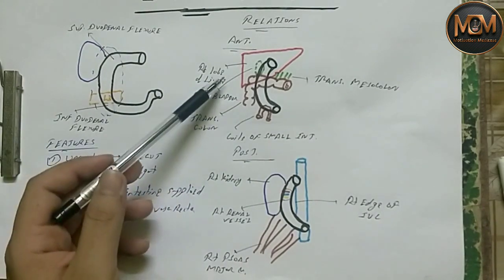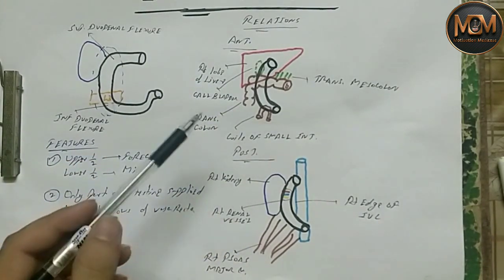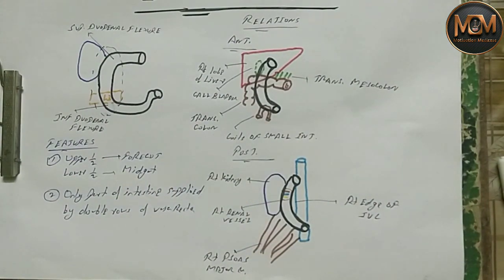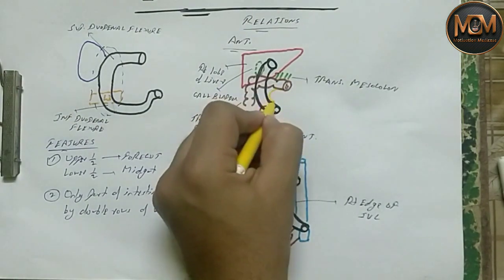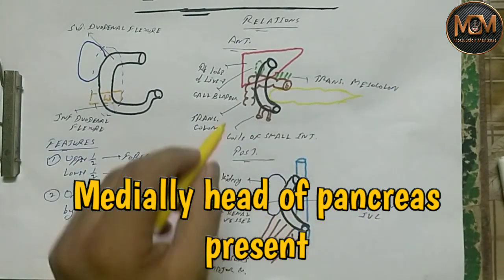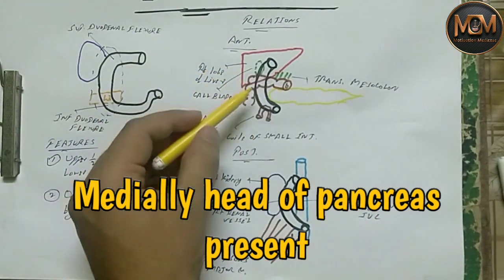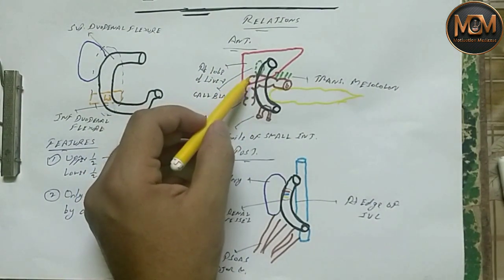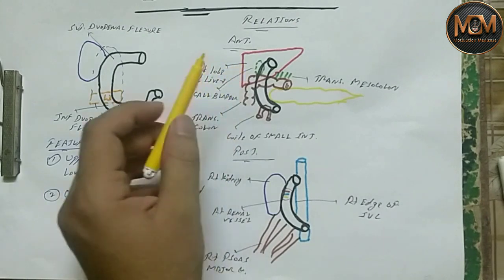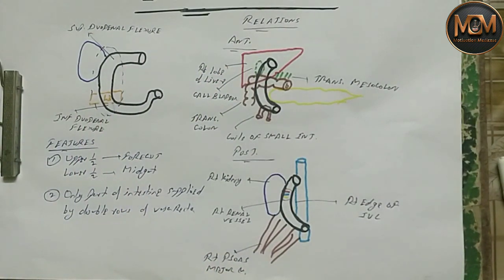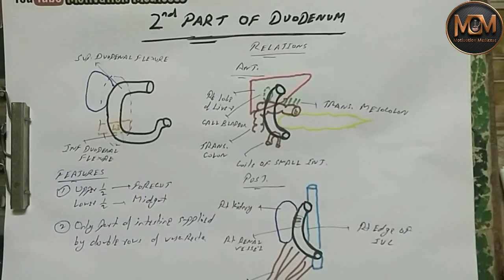Now for the medial and lateral relations: medially, the pancreas is present. Laterally, similar to some anterior structures, the transverse colon, ascending colon, hepatic colic flexure, and the right lobe of the liver are present. That's all for this video — hope you like it. Please like, share, and subscribe. Thank you!